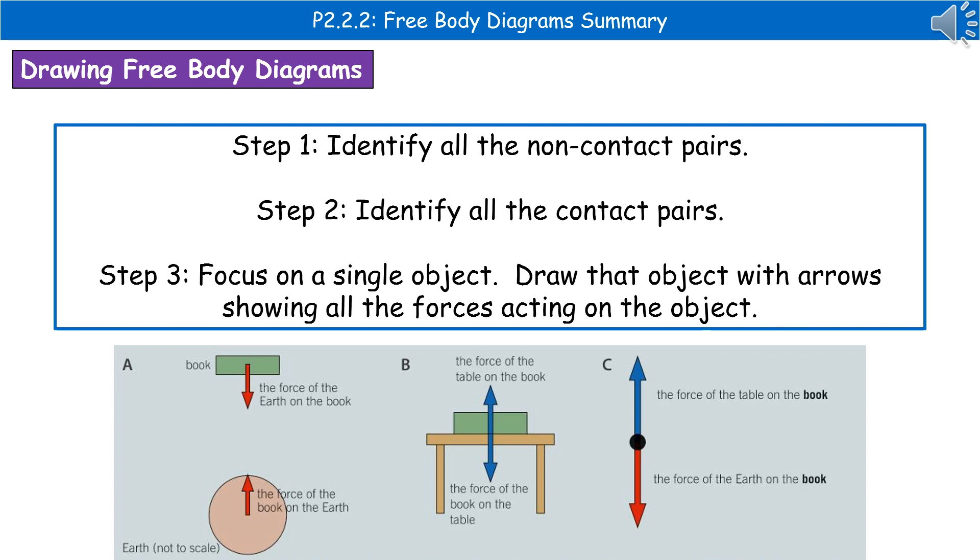Then we focus on our single object, which in this case is the book. Once we've got that, we draw the object as either a box or a circle.